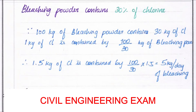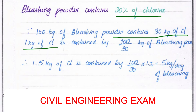Now we find the bleaching powder content. The bleaching powder contains 30% chlorine. So 100 kg of bleaching powder contains 30 kg of Cl₂. Therefore, 1 kg of chlorine is contained in 100/30 kg of bleaching powder. Since we require 1.5 kg of chlorine, the bleaching powder required is (100/30) × 1.5.